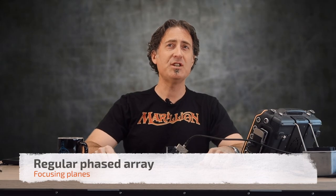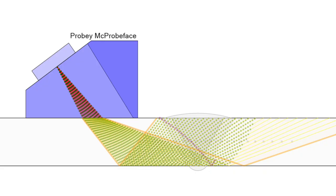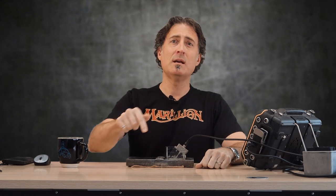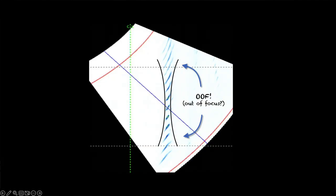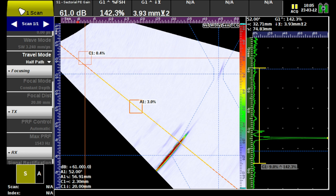In regular phased array, by changing the timing that we fire the elements, we can electronically focus the beam. This gives us the ability to drastically increase the resolution at the focal plane. Using more elements means a higher aperture and more focusing ability, but this comes at a cost — as I showed in the 16, 32, 64 element video (link in the description). It may be really in focus at one spot, but a little out of focus as we move away from the focal plane.